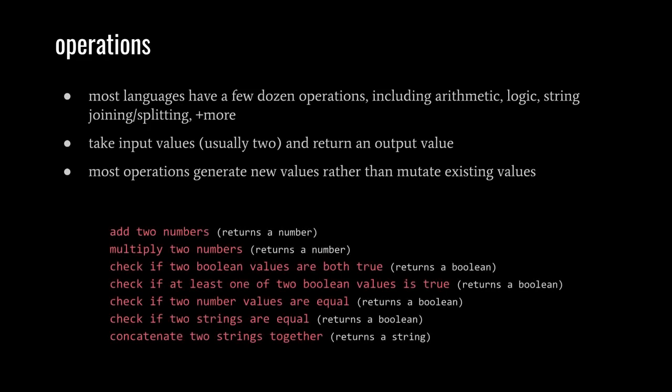Examples include, most obviously, arithmetic, where we might add together two numbers and it returns their sum, or multiply two numbers which returns their product. But aside from arithmetic operations, we also have logic operations. The AND operation will check if two Boolean values are both true, and returns true if they are, otherwise returns false.